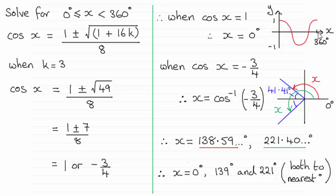You also get 1 when x is 360 degrees, but do remember x has to be less than 360 degrees for this question. So just one value, one solution: x equals 0 degrees.